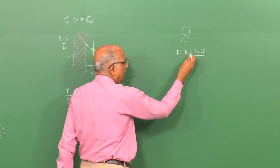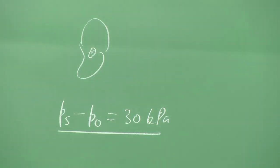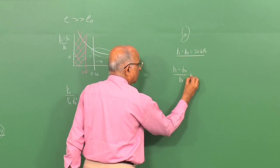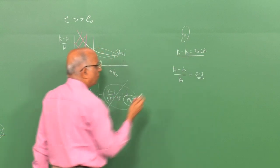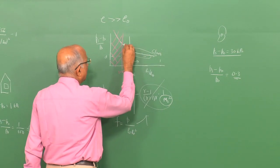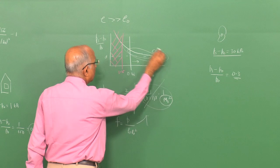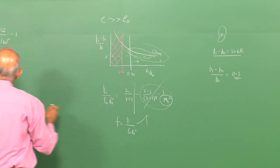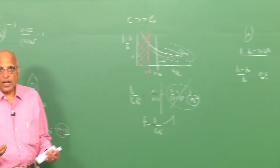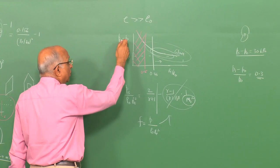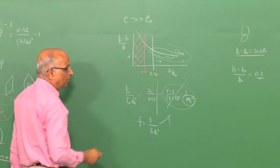Not only for glass shattering — consider an ear drum rupturing near an explosion. The eardrum gets ruptured when PS minus P0 is of the order of 30 kPa. That gives (PS minus P0)/P0 equal to 0.3, which is still much lower than the near-field values we derived. It therefore becomes necessary to evaluate blast wave properties far from the explosion site.